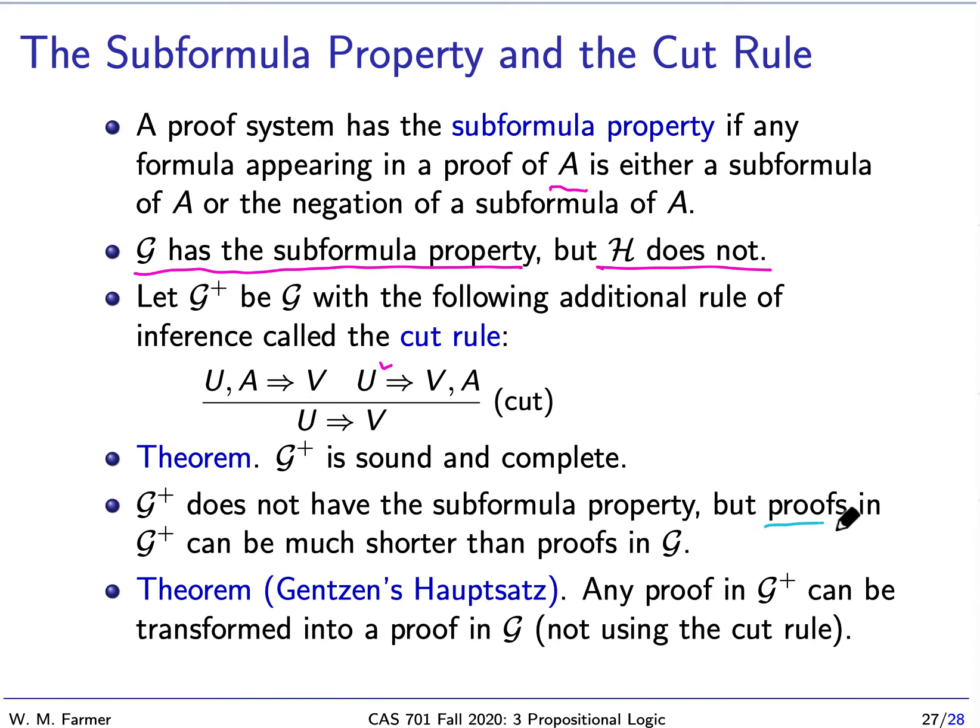Proofs in G plus can be much shorter than proofs in G. We're shortening up the proofs because this works as a lemma, basically. We're trying to show V, we just assume something that's useful and then we can show V easier. Gentzen proved a theorem called his Hauptsatz, his principal theorem. It says any proof in G plus can be transformed into a proof of G that doesn't use the cut rule. So the cut rule is superfluous. We don't need it in terms of what we can prove, but it's very convenient because it allows us to prove things with much shorter proofs.